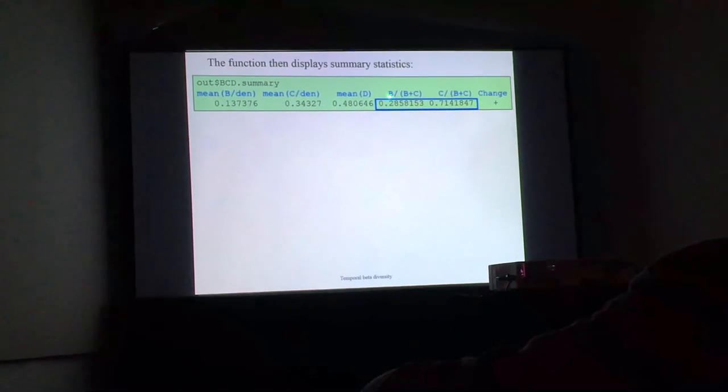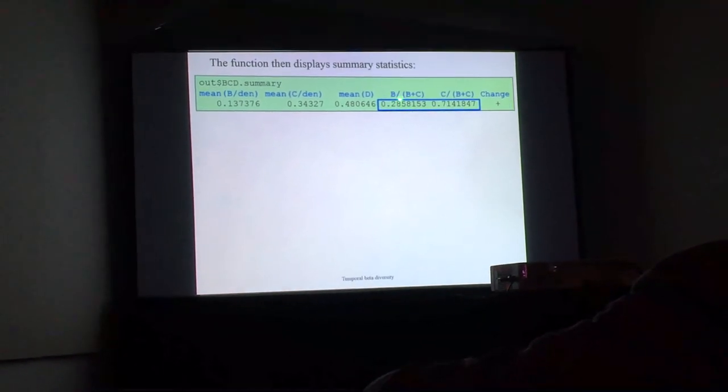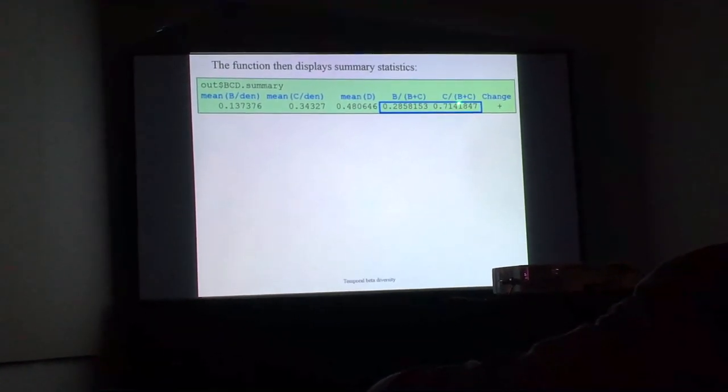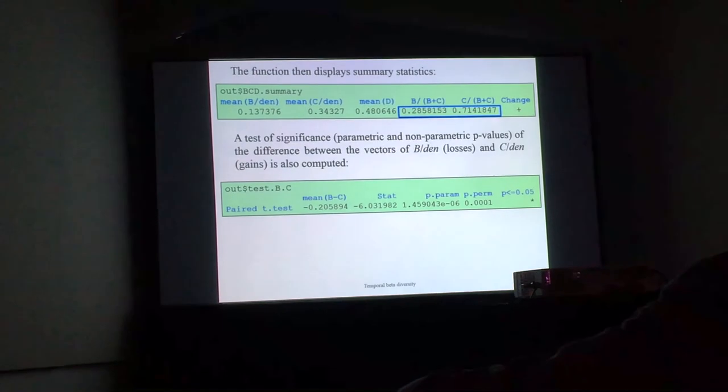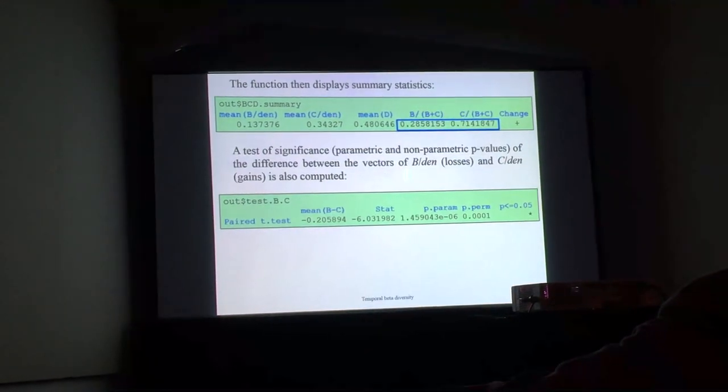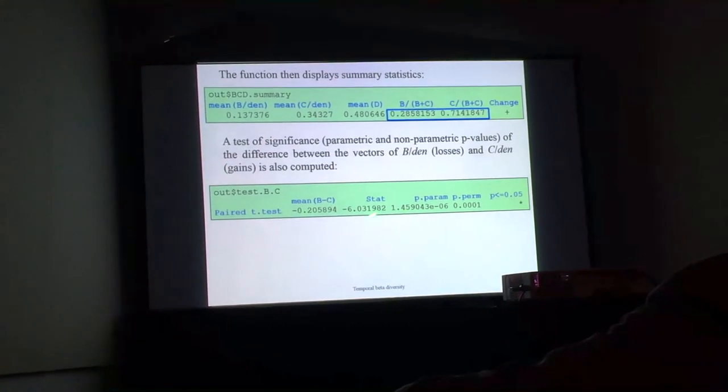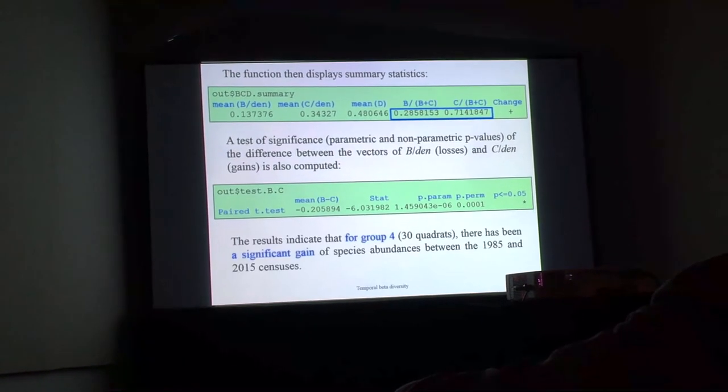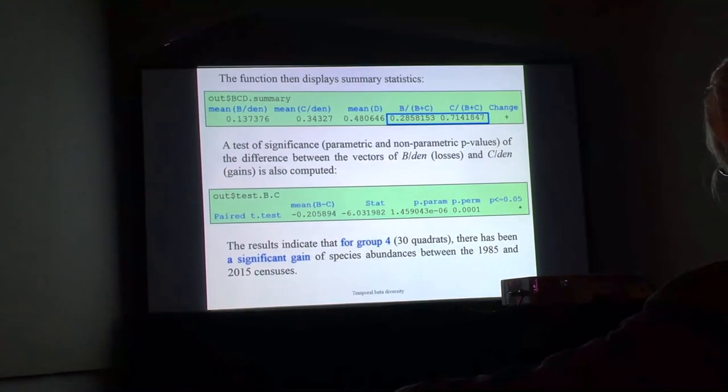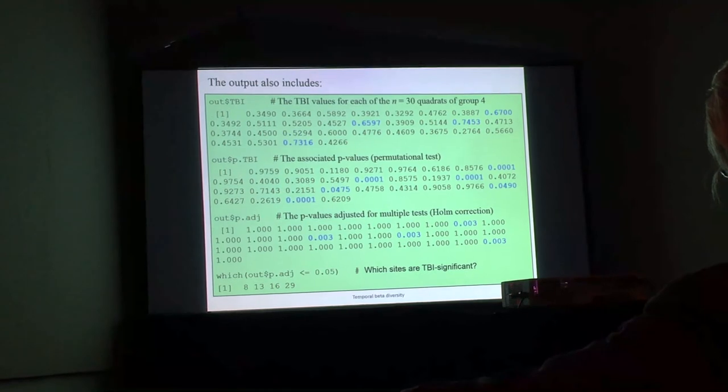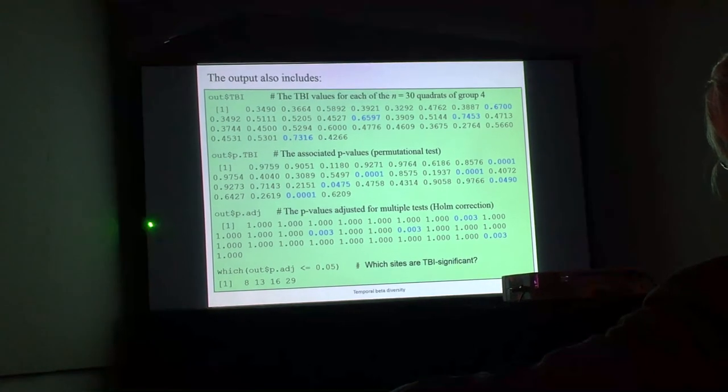There is also a test of significance, which is a paired t-test of the B and C vectors computed here with the p-values. The results indicate that for the swamp, there has been a significant gain of species abundances between the two surveys. The function also produces the indices for each of the 30 sites, the p-values and the adjusted p-values.